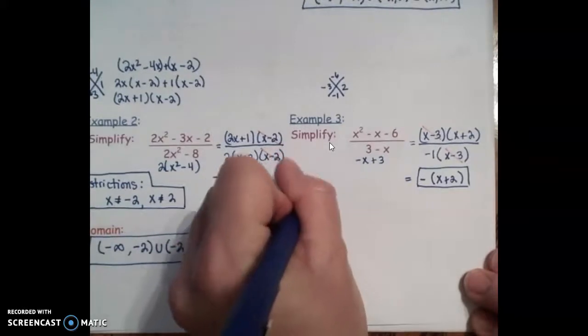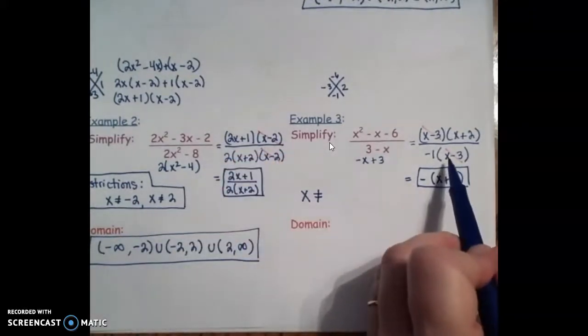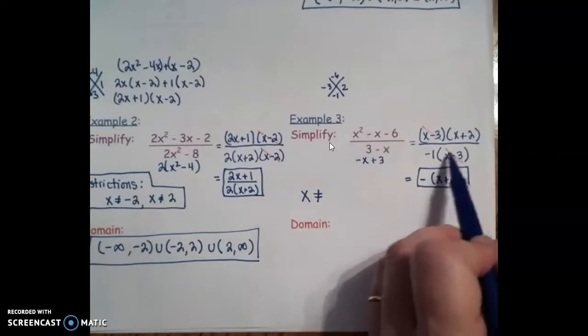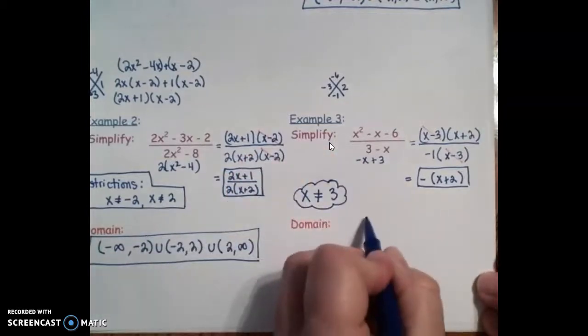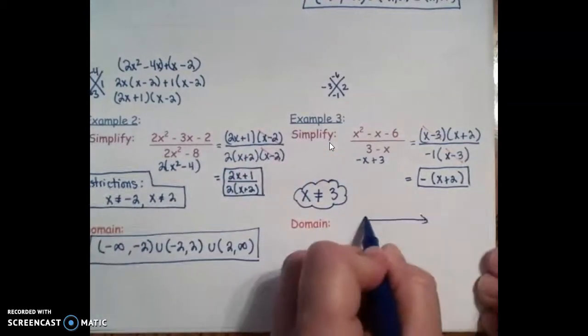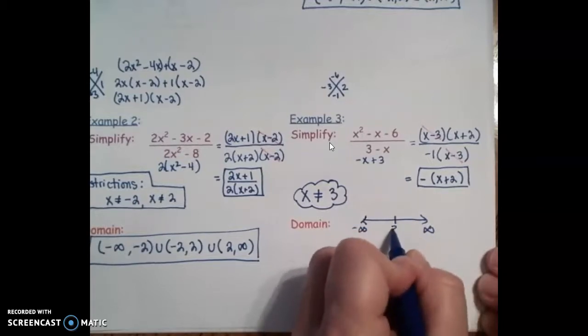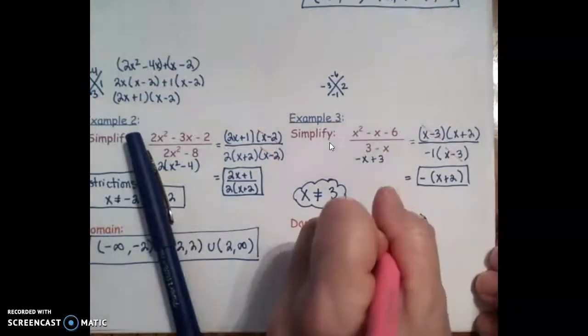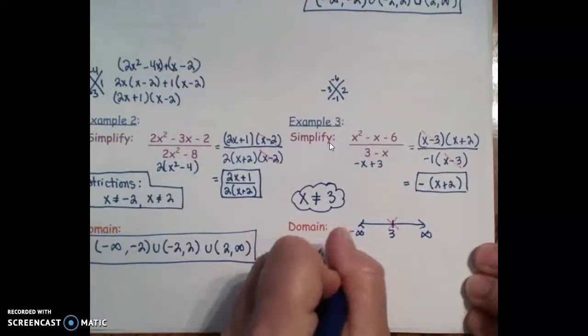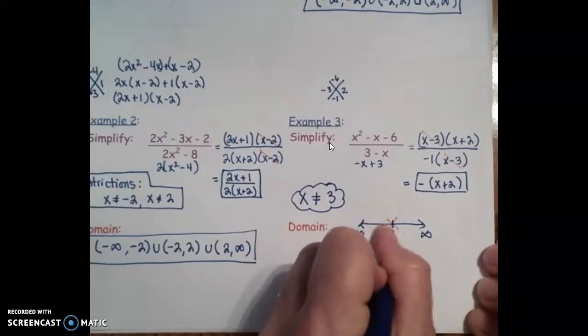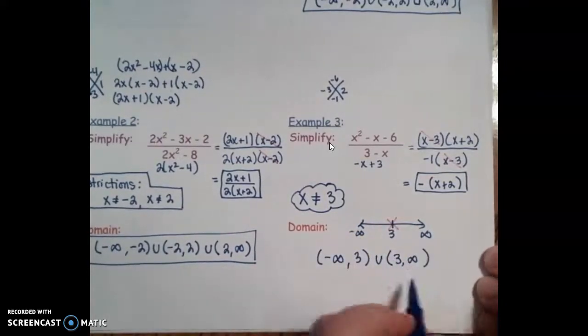Now for your restrictions, x cannot be, if you look here at factored form, 3 minus 3 would give us a 0. So there's only one restriction this time. Think about your number line. We got negative infinity, positive infinity, and we have this 3 sitting here. I can use every number except that one. So we're going to say negative infinity to positive 3, and 3 to infinity for your domain. See you next time.